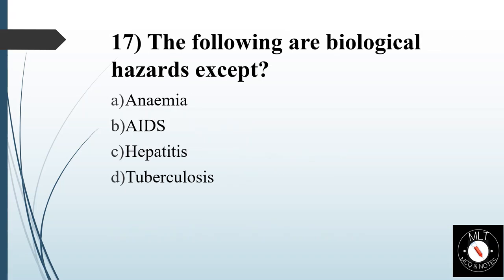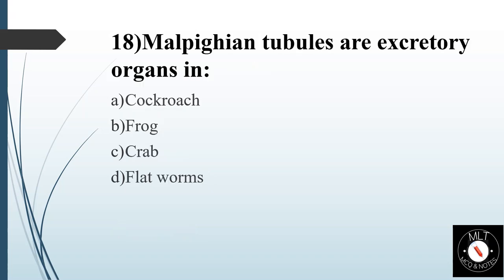Seventeenth question. The following are biological hazards except. Option A: Anemia. Option B: AIDS. Option C: Hepatitis. Option D: Tuberculosis. Answer is Option A: Anemia.